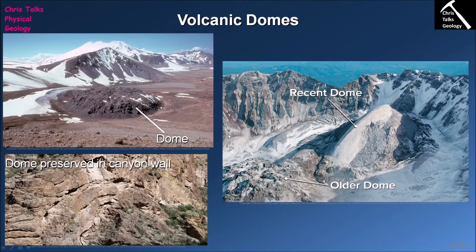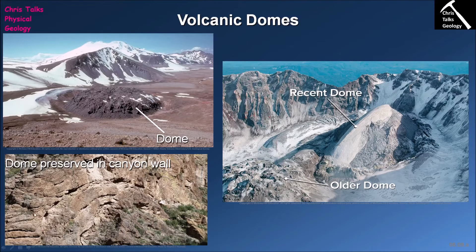In some cases you do actually get lava flows coming out of your dome — you can see one right here; this lighter area is the result of a lava flow exiting the dome. But on the whole, most of the lava that makes up a dome will simply be injected into the middle and stay there. In this picture in the bottom left you can see a volcanic dome preserved in a canyon wall, and you can see that new magma added to the core pushes the older layers away — this is how the volcanic dome grows and develops.